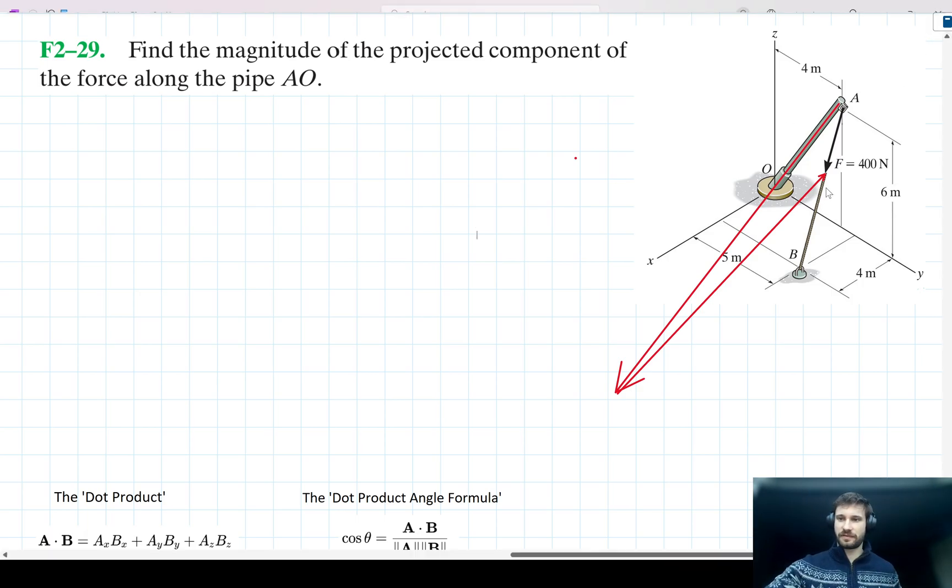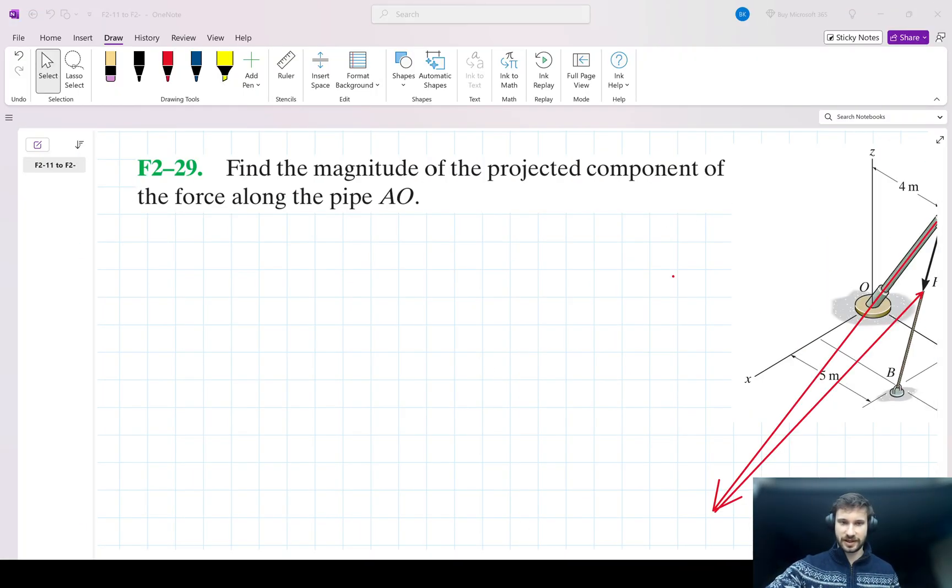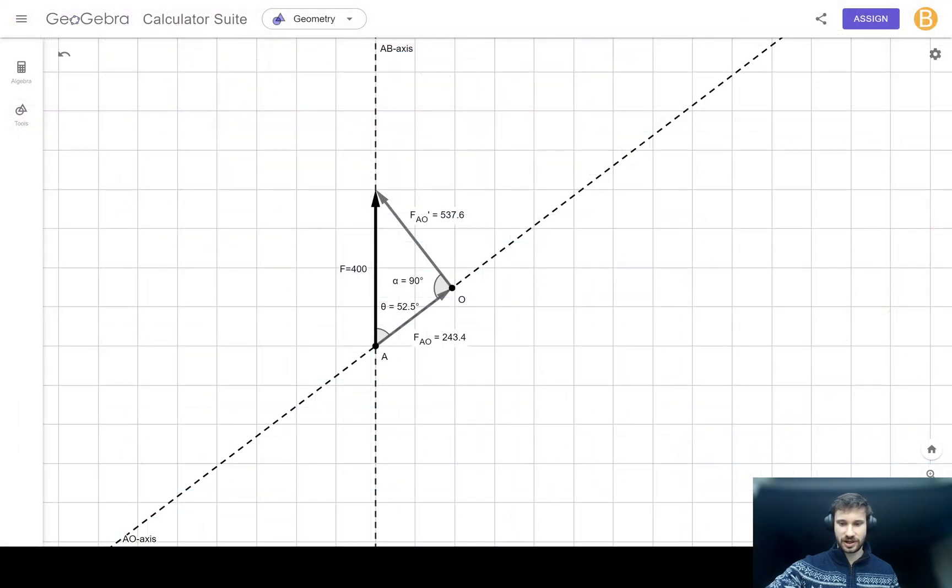To help us understand this, I've created a simulation here in Geogebra where we have this force F acting along AB and we have this component force acting along AO. And like I say, it can even be negative if we want it to be.